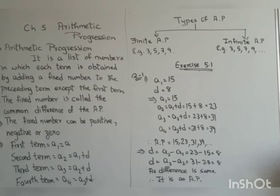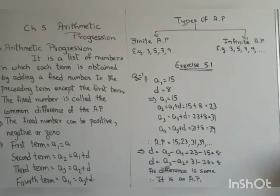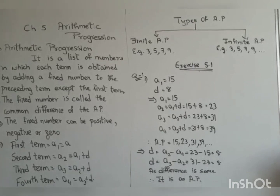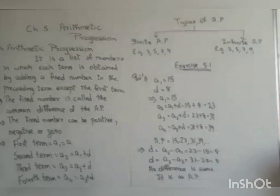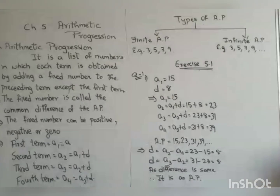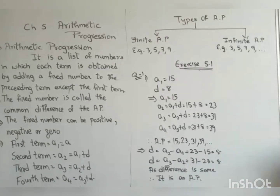For example, suppose the first term is 2 and the fixed number added is 3. So 2 plus 3 is 5, then 5 plus 3 is 8, and like this, to each term the fixed number is added. The list of numbers so obtained is known as arithmetic progression.